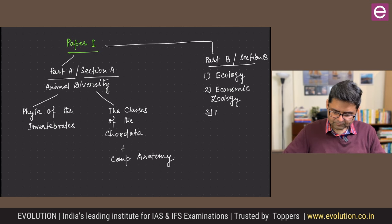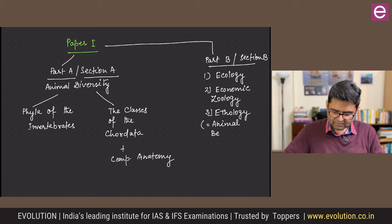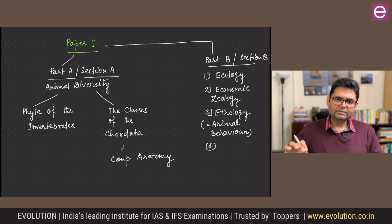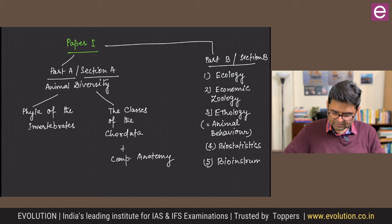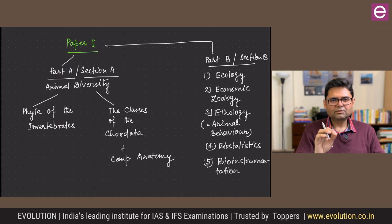The third topic is ethology, which basically means animal behaviour — a topic that is very interesting, easy to prepare, and very important. In section B, invariably you will find two short notes from ethology. Then there are two small areas: biostatistics and bioinstrumentation. That is the composition of Paper 1.